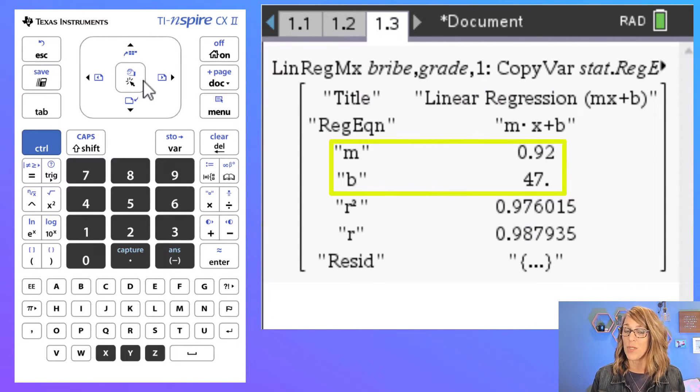M here is 0.92, so we would say y is equal to 0.92x plus 47, which is our b.